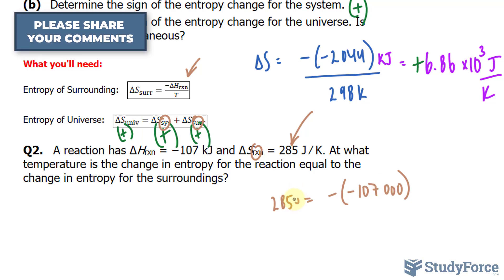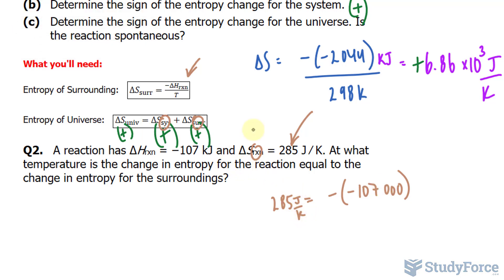The reason why I'm doing that is because this is in joules per Kelvin, and that originally is in kilojoules. So you want to make it into joules. By multiplying by 1000, it becomes joules. Over T.